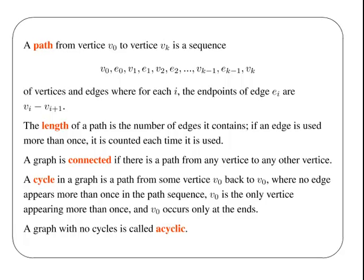A path from vertex V0 to vertex VK is a sequence of vertices and edges, where for each i, the endpoint of edge EI are VI minus VI plus 1.